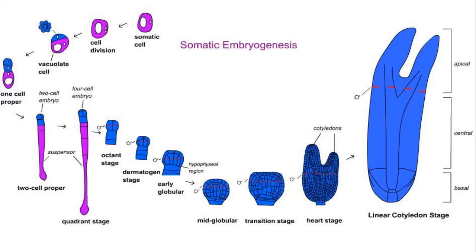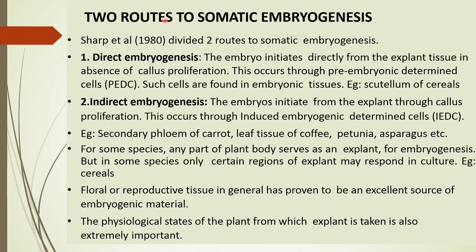Sharp et al. in 1980 divided somatic embryogenesis into two routes. Direct embryogenesis: embryos initiated directly from the explant tissue in the absence of callus proliferation, occurring through pre-embryonic determined cells such as those found in embryonic tissue — for example, the scutellum of cereals. Indirect embryogenesis: embryos initiated from the explant through callus proliferation, occurring through induced embryonic determined cells — examples include secondary phloem of carrot, leaf tissue of coffee, and asparagus.